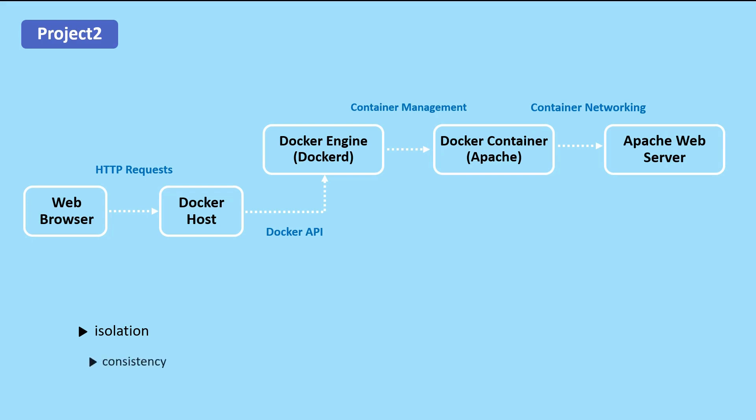Secondly, consistency. By packaging the Apache web server and its dependencies into a Docker container, developers can ensure that the application runs consistently across different environments such as development, staging, and production. Thirdly, reproducibility. Docker images are portable and can be easily shared with others, making it easy for developers to reproduce each other's work.